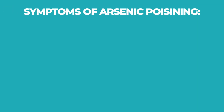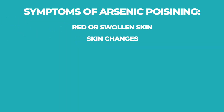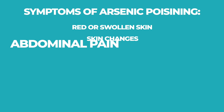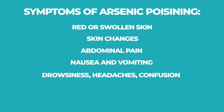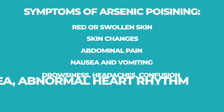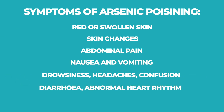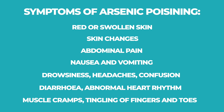Long-term exposure to inorganic arsenic, mainly through drinking water and food, can lead to chronic arsenic poisoning. Skin lesions and skin cancer are the most common symptoms. Symptoms of arsenic poisoning may include red or swollen skin, skin changes such as new sore lesions, abdominal pain, nausea and vomiting, drowsiness, headaches, confusion, diarrhea, abnormal heart rhythm, muscle cramps, and tingling of fingers and toes.